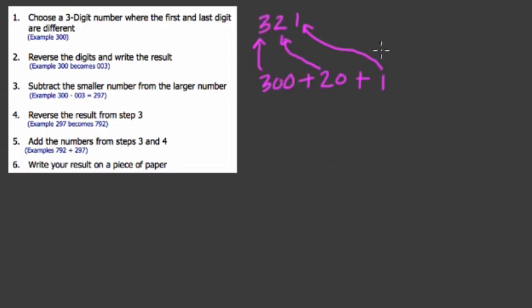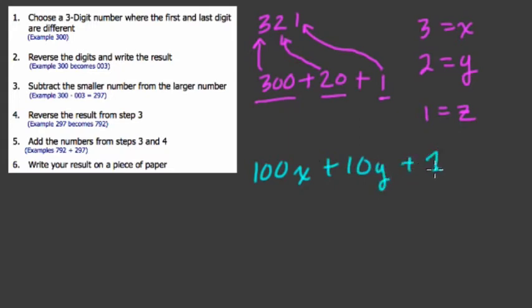So in algebra, let's say we call 3x, let's call 2y, and let's call 1z. We'll put a line through the z so it doesn't look like a 2. So if we want to use these variables to make 321, we have to take 3 and multiply it by 100 to get 300, 2 by 10 to get 20, and 1 just by 1 to keep it in the 1's place value. So if we want to write this as an expression, we do 100 times x, and then we do 10 times y, and just 1 times z. So this is our expression for three-digit numbers.